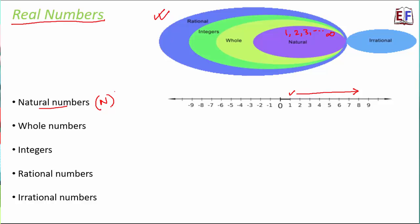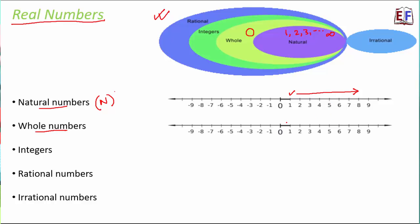Next is whole numbers — all natural numbers plus zero. The extra element in whole numbers is zero. In the diagram, natural numbers sit inside whole numbers, meaning all natural numbers are whole numbers, but not all whole numbers are natural numbers. On the number line, whole numbers start from zero to infinity. Whole numbers are denoted by capital W.